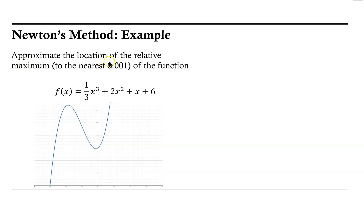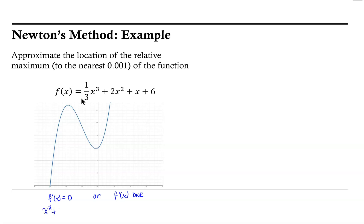To approximate the location of a relative maximum, we use the critical points of the function. A critical point occurs where the derivative equals zero or where the derivative does not exist. Looking at our function and its graph, the second option does not apply, so we look for where the derivative equals zero. Our derivative is x² + 4x + 1 = 0, and the solutions to that equation are our critical points.